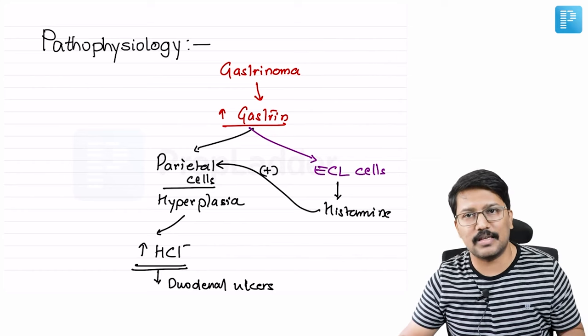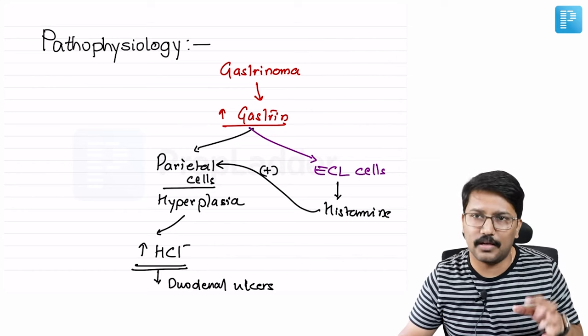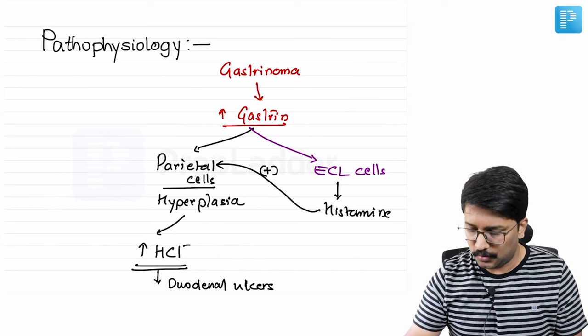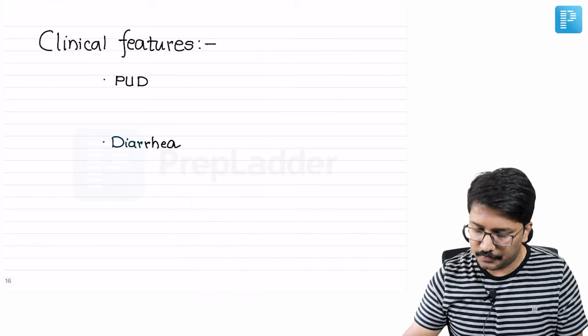Whenever you have peptic ulcer disease and the patient is also complaining of diarrhea, you should be suspecting Zollinger-Ellison syndrome. That completes our pathophysiology.